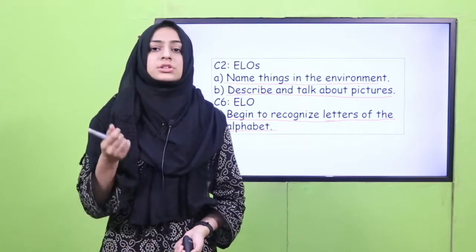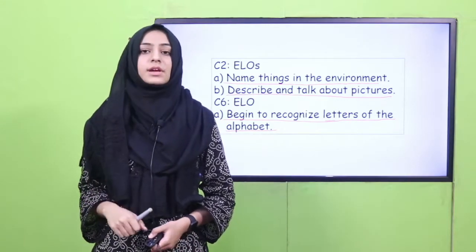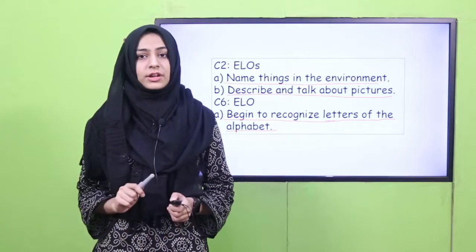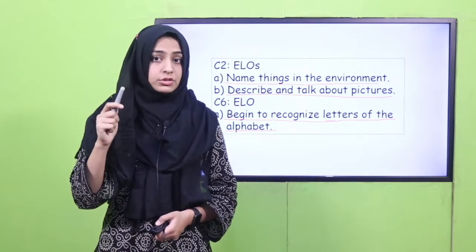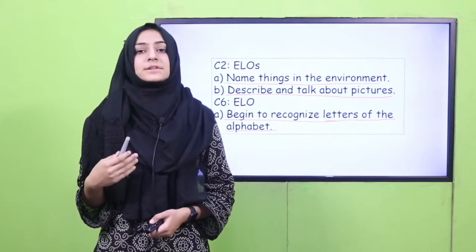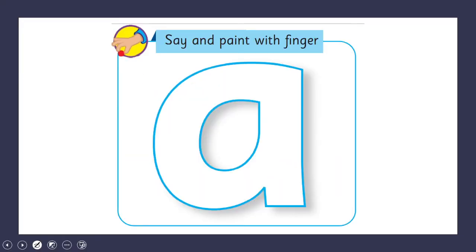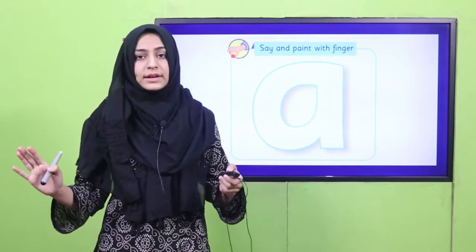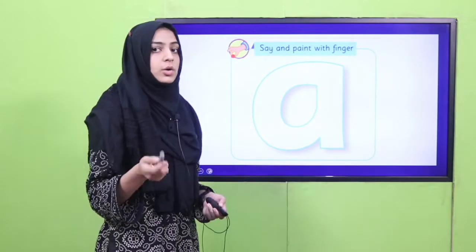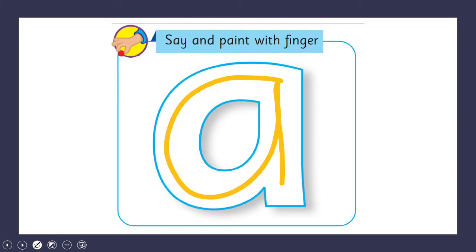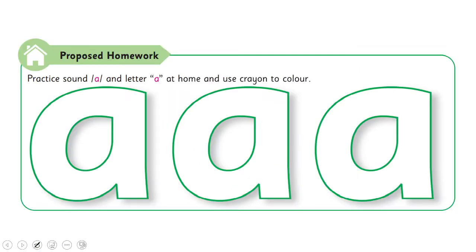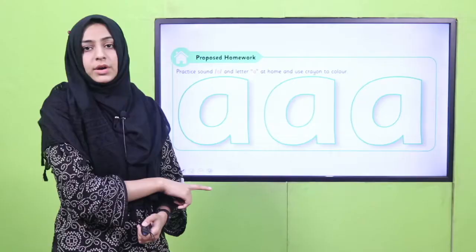This story is an additional thing — agar aapke paas time bach jaye, you can tell it to your students. Okay, moving back to the lesson. We are going to have a lot of fun together. But first, hum revise karenge jo pichle lesson mein hamne pada tha. We learned the letter آ — this is the face of آ — and we also learned how to trace it. The sound was آ. I hope that you have practiced it really well at home and at school. Now this is the time — hum ek dafa dekhenge ke hamne isko kaise pada tha. This is the way to trace the sound آ.